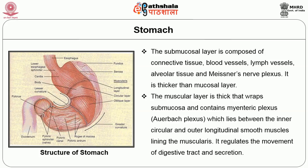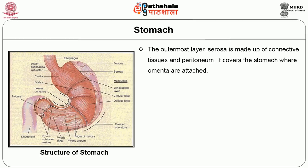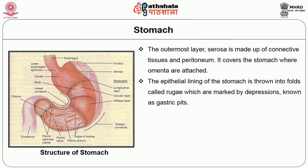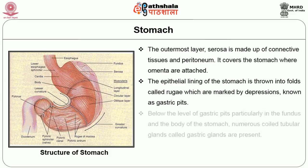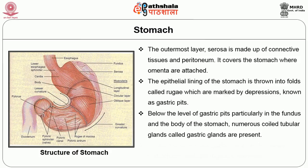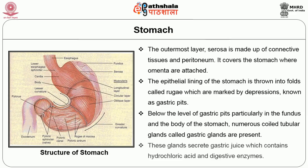The outermost layer, the serosa, is made up of connective tissues and peritoneum, covering the stomach where the omentum is attached. The epithelial lining of the stomach is thrown into folds called rugae, which are marked by depressions known as gastric pits. Below the level of the gastric pits, particularly in the fundus and body of the stomach, numerous coiled tubular glands called gastric glands are present, which secrete gastric juice containing hydrochloric acid and digestive enzymes.